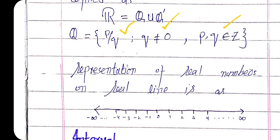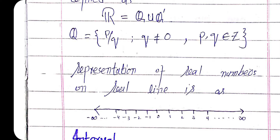The real line is basically a geometrical representation of the real numbers. At the center of this real line we have zero, on the left extreme we have minus infinity, and on the right extreme we have plus infinity. Between minus infinity and plus infinity there are infinitely many numbers. For example, between 0 and 1 there are infinitely many real numbers such as 0.1, 0.22, 0.23, 0.24, 0.25, 0.22999, and so on. There are infinitely many real numbers between any two real numbers.